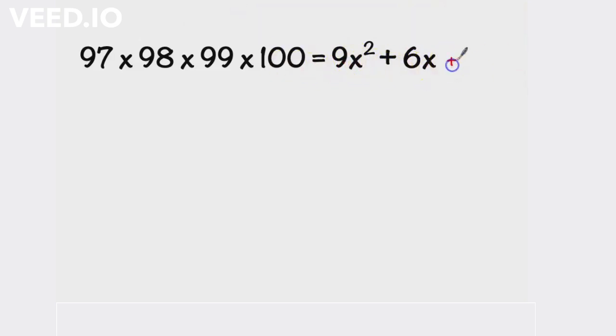First we will try to complete the square on the right hand side, so we will add 1. Now we can turn this equation into (3x + 1)² but we need also to add 1 on the left hand side so the equation is balanced.